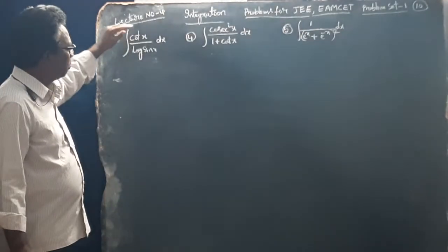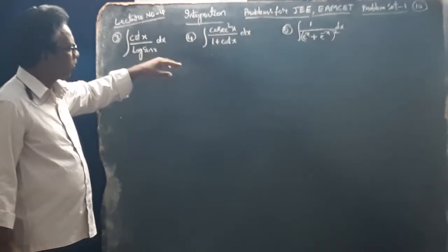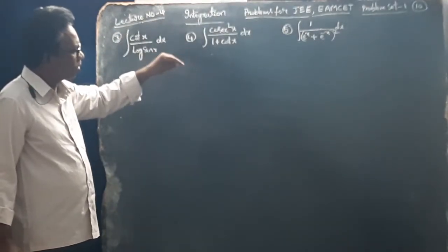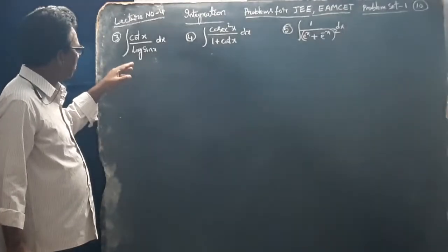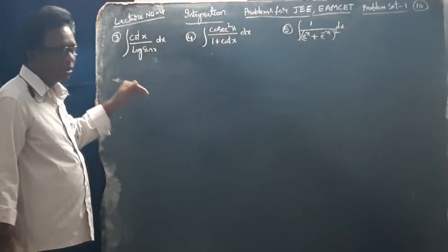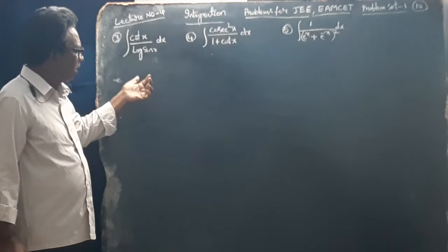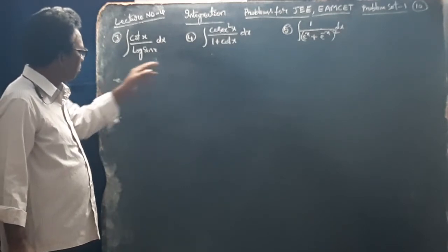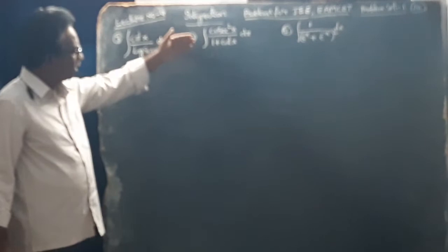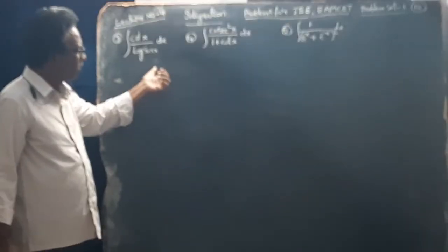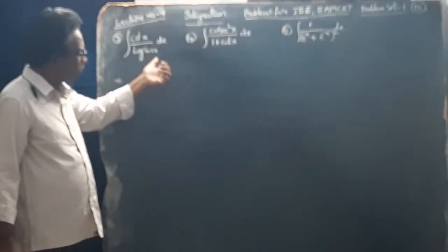Hello everyone, I am the Academy of Education. First, we have 10 sums in the problem set. The 10 sums will be 2 sums already. Now we have 3 sums. M-set and A-E-set and 1080 are important sums.